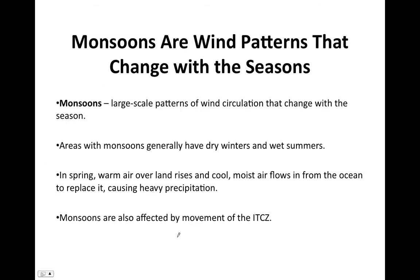Monsoons are wind patterns that change with the seasons, bringing either dry periods or heavy precipitation. They are large-scale patterns of wind circulation that change seasonally. Areas with monsoons generally have dry winters and wet summers. In spring, the air over land rises and cool moist air flows in from the ocean to replace it, causing heavy precipitation. Monsoons are also affected by the movement of the ITCZ.